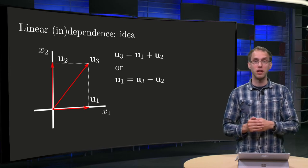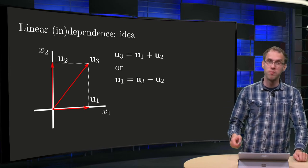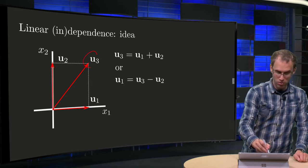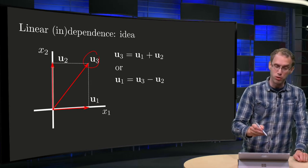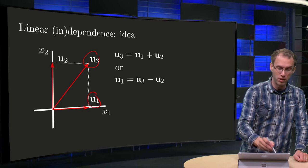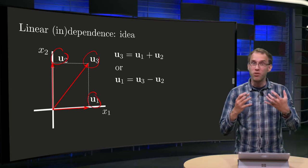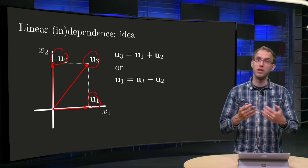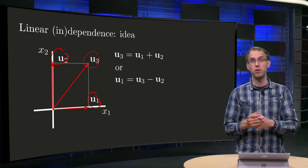Let us look at an example at this picture. We see that the vector u3 over here can also be written as the sum of u1 and u2. So u3 in a sense depends on u1 and u2 because u3 equals u1 plus u2.